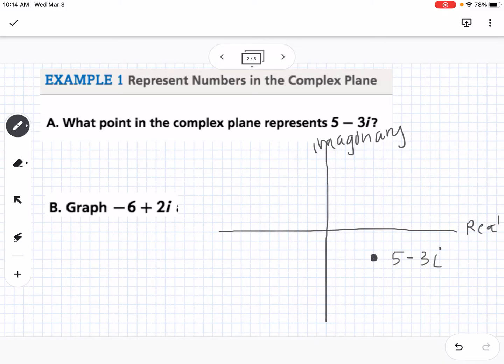And if I'm graphing negative 6 plus 2i, I would go to negative 6 on the real axis, 1, 2, 3, 4, 5, 6, and up to positive 2 on the imaginary, so that would be the point negative 6 plus 2i. So that is how you would graph complex numbers.